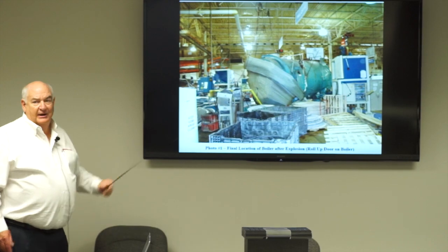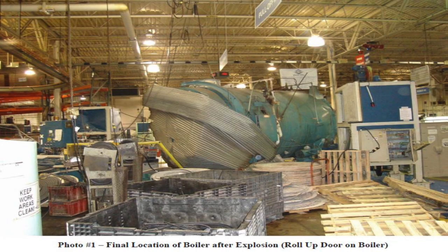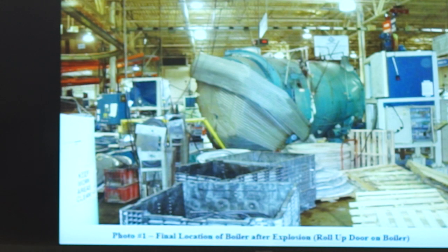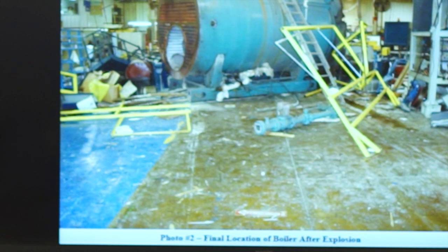This is a steel corrugated garage door that was closed at the time between the boiler room and the manufacturing area. When the incident occurred, the boiler vessel itself went through the door. The door wrapped itself around the boiler and traveled approximately 100 feet into the manufacturing facility, where the equipment stopped its progress.